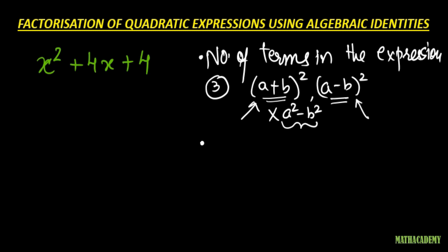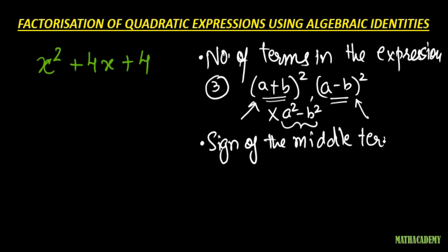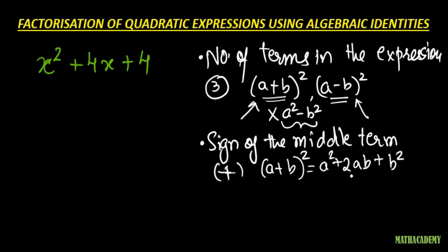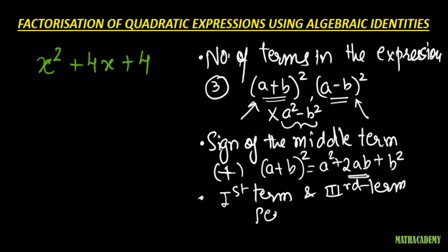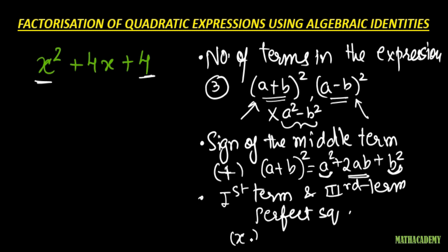The second thing which we need to observe is the sign of the middle term — the term which has x in it. The sign of the middle term here is positive. If the middle term is positive, then it definitely has to be the identity (a + b)², because here we have the 2ab term which is the middle term and it is positive. The third thing to notice is whether the first and the third term are perfect squares. In our identity, the first term is a² and the third term is b², both are perfect squares. In our expression, both are perfect squares: the first term is x² and the last term can be written as 2².